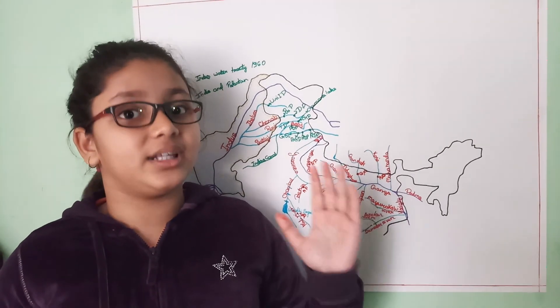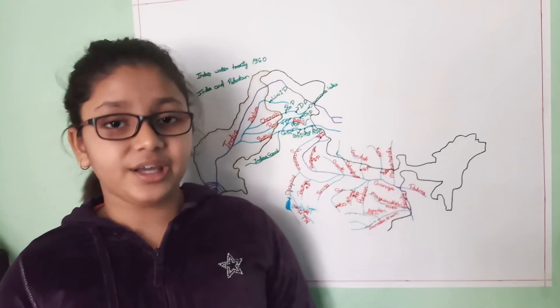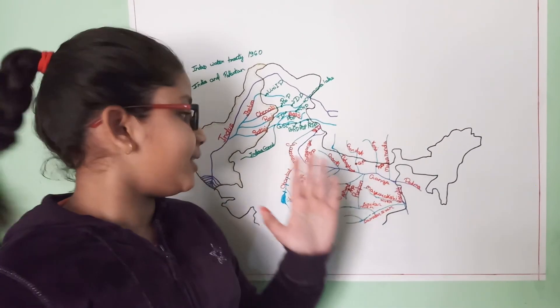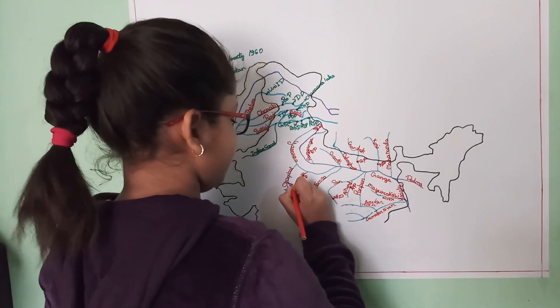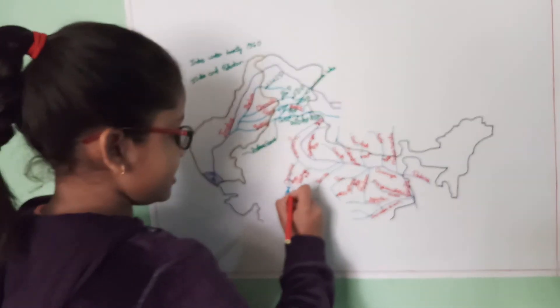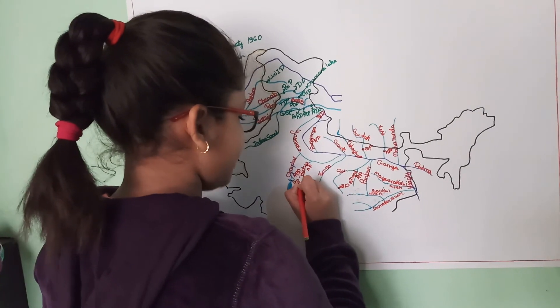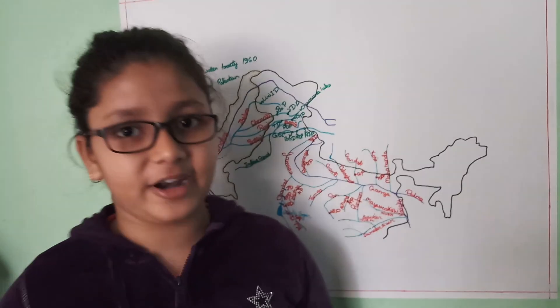Then comes the Chambal project, which is constructed on the river Chambal. It is a joint project of Madhya Pradesh and Rajasthan. There are three dams constructed on this project: the Rana Pratap Dam, the Gandhi Sagar Dam which is in Madhya Pradesh, and the Jawahar Sagar Dam in Rajasthan.